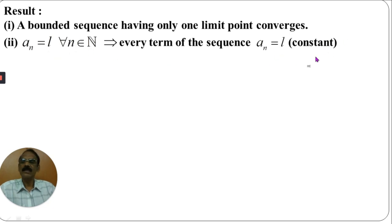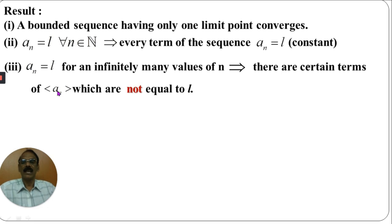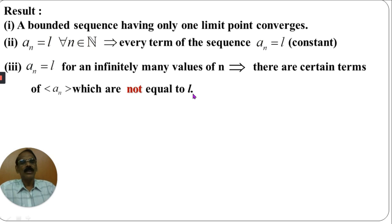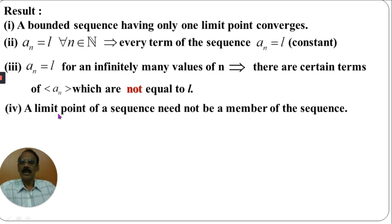If AN equals L for infinitely many values of N, then there are certain terms of the sequence AN which are not equal to L. For example, the sequence AN whose nth term is (-1)^N: every even term is 1, but what about the odd terms? Not 1. Therefore there are certain terms — the odd terms in this example — which are not equal to 1. Hence, AN equals 1 for infinitely many values of N implies there are certain terms of the sequence AN which are not equal to L.